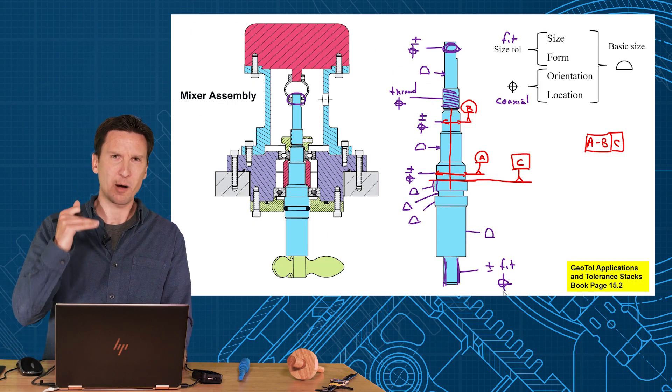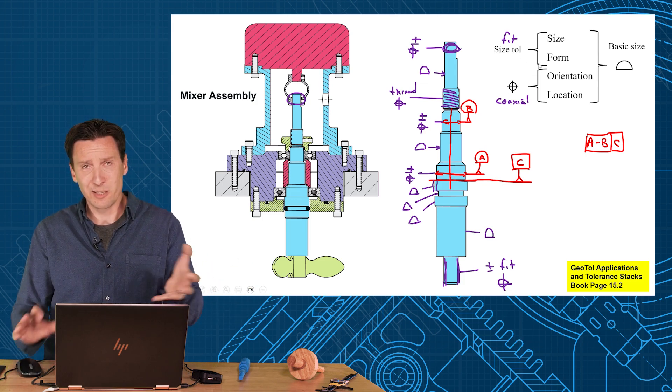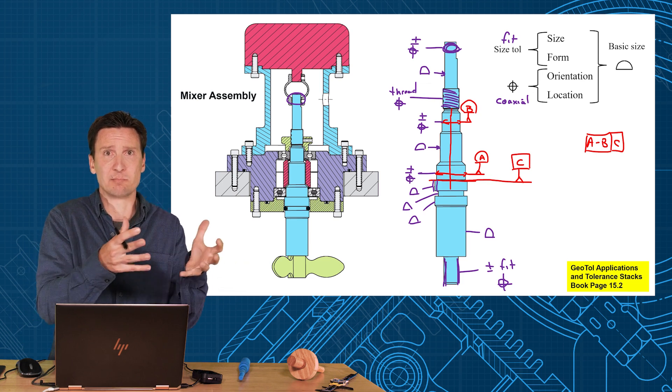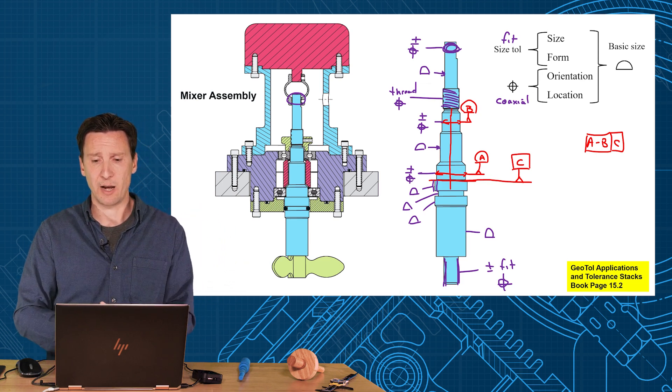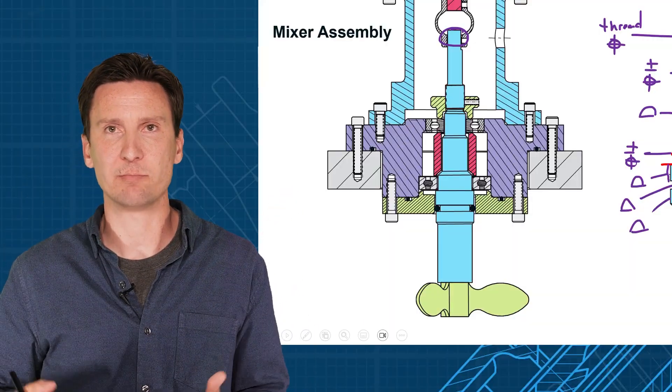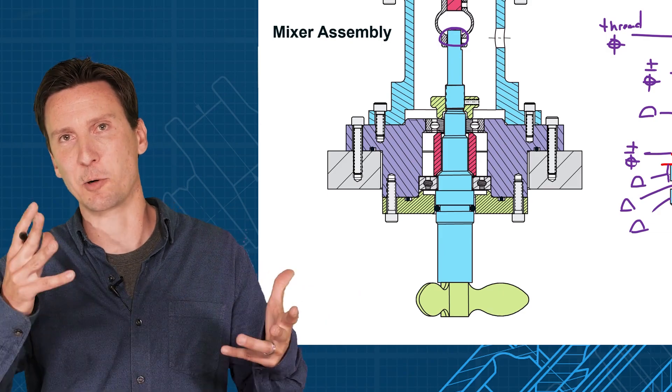Well it's anytime you have a fit with something else, that's what plus and minus is great for. Size, MMC, LMC, and then you have the coaxiality separate issue. Profile is just like, I care about everything the same, either I care about everything, tight profile, I don't care about anything, loose profile.